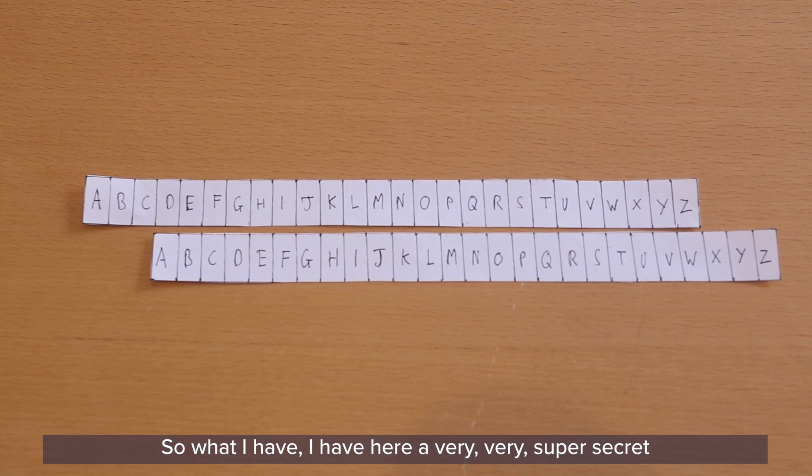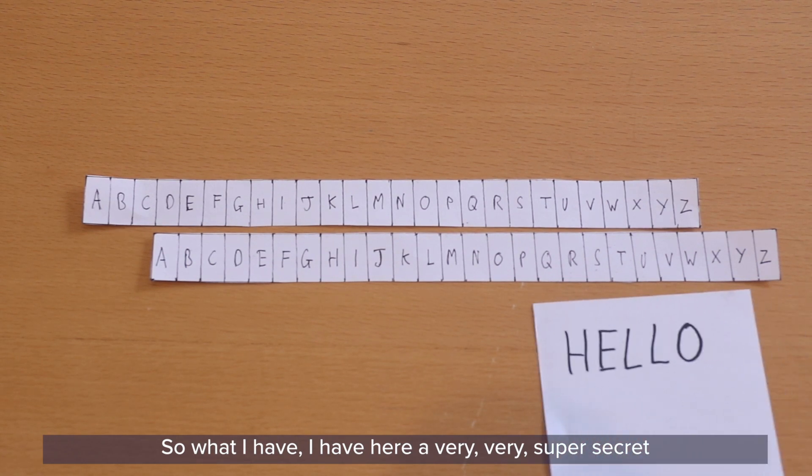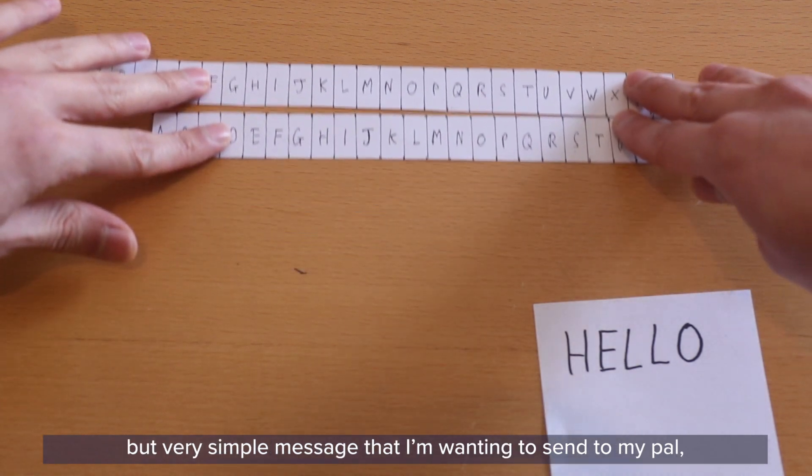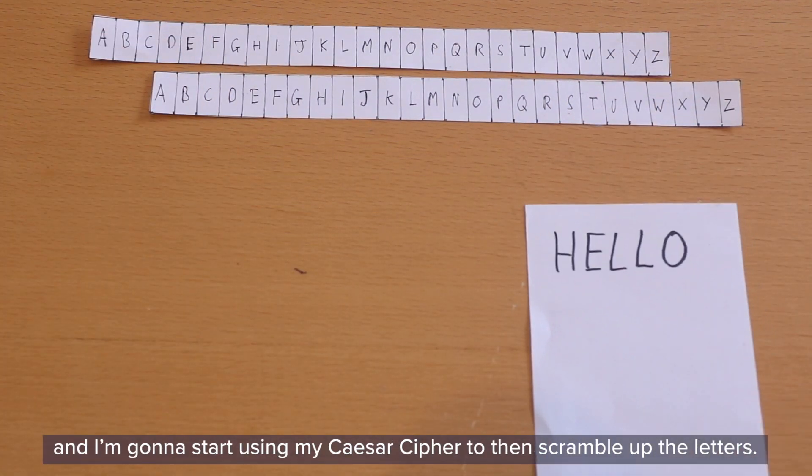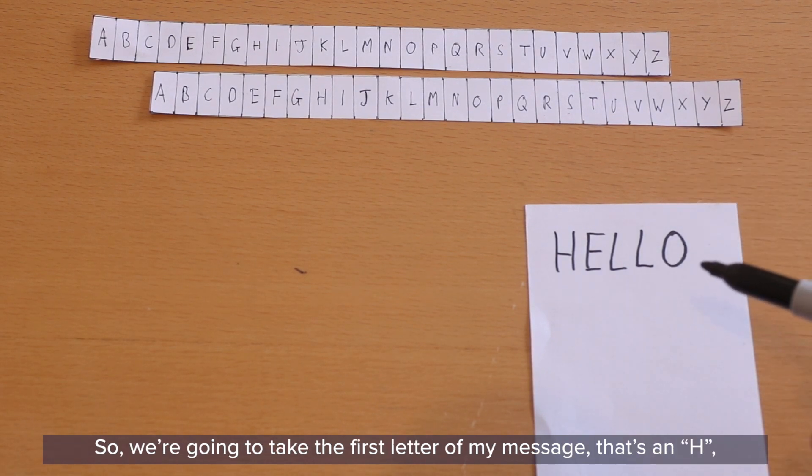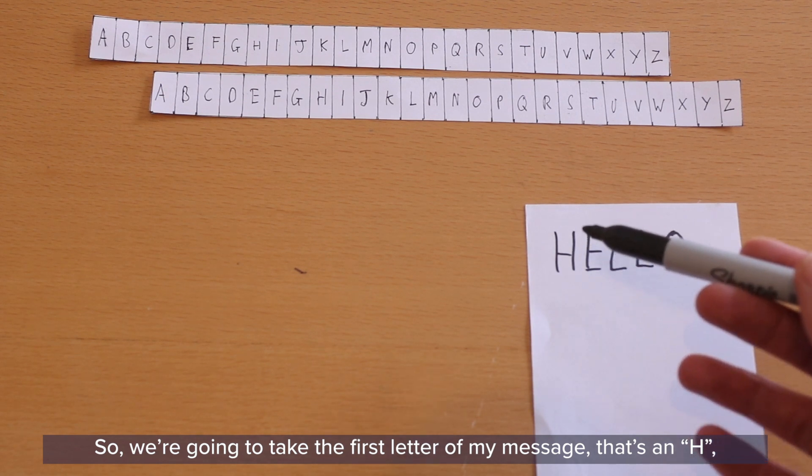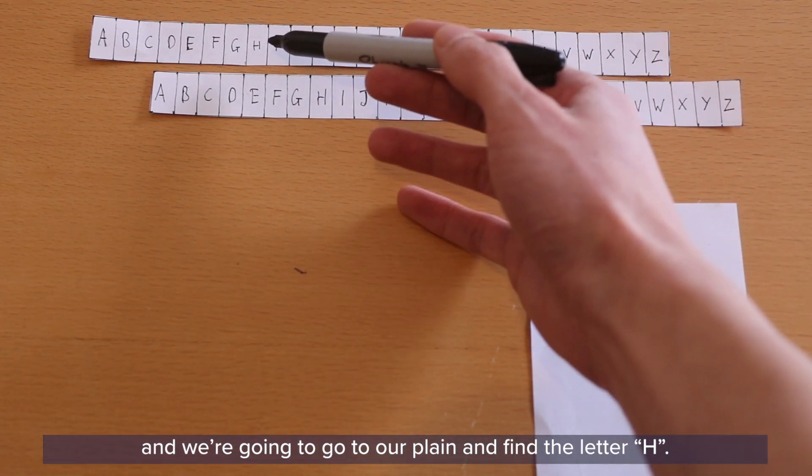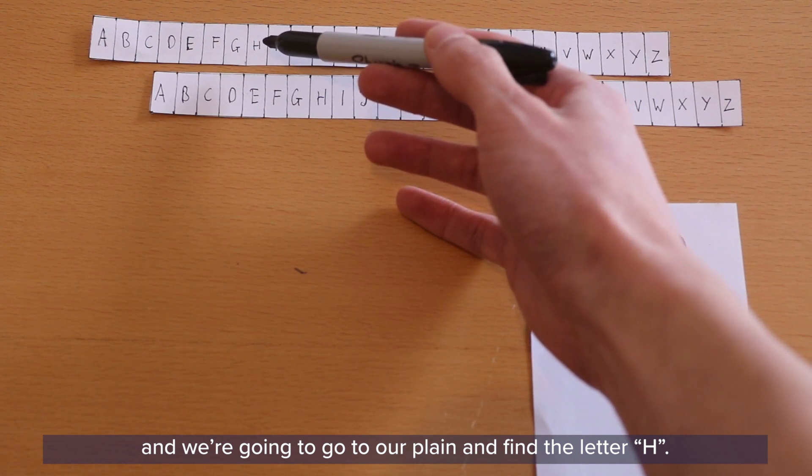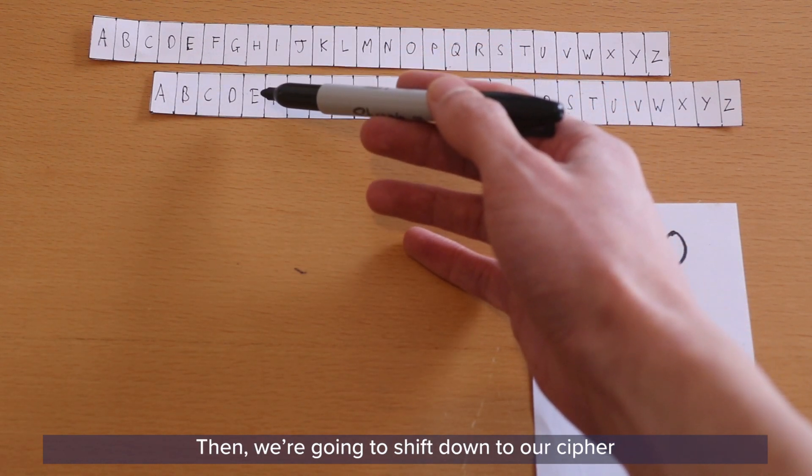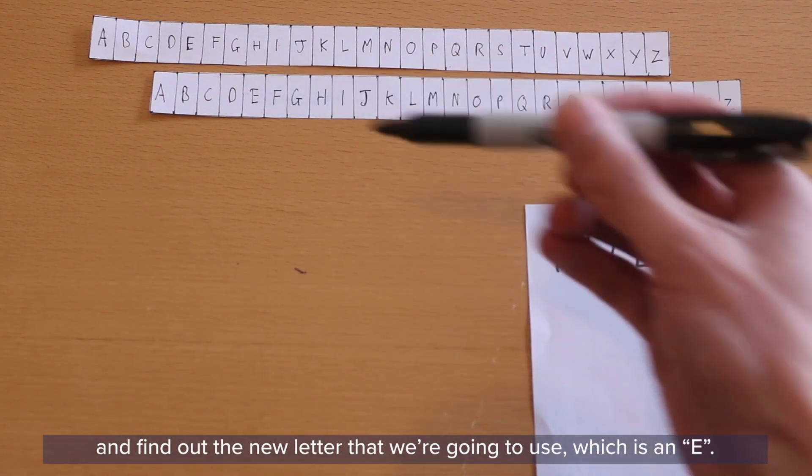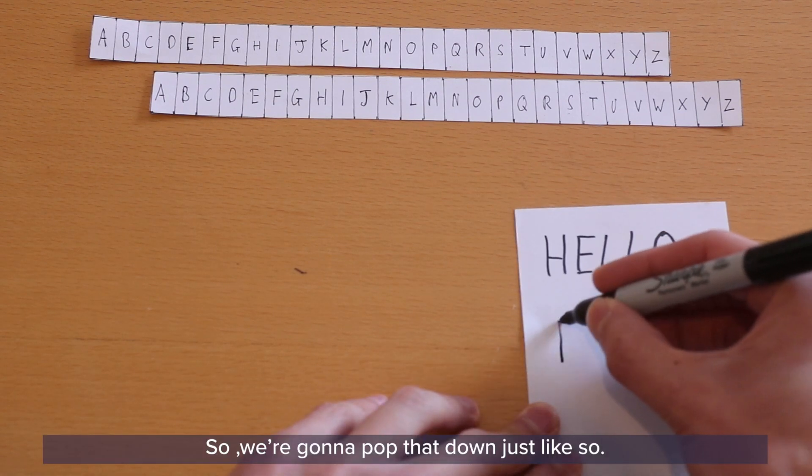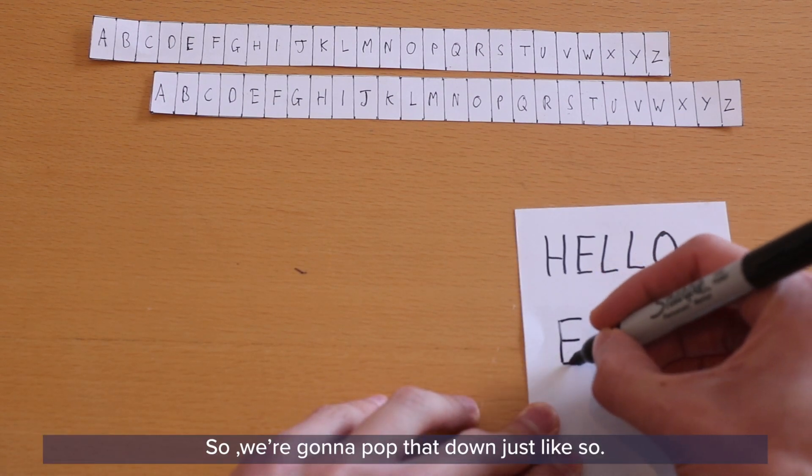So what I have, I have here a very, very super secret but very simple message that I'm wanting to send to my pal. And I'm going to start using my Caesar cipher to then scramble up the letters. So we're going to take the first letter of my message, that's an H, and we're going to go to our plane and find the letter H. Then we're going to shift down to our cipher and find out the new letter that we're going to use, which is an E. So we're going to pop that down just like so.